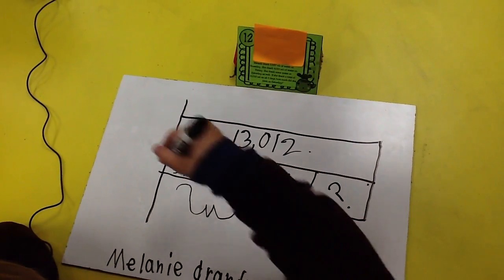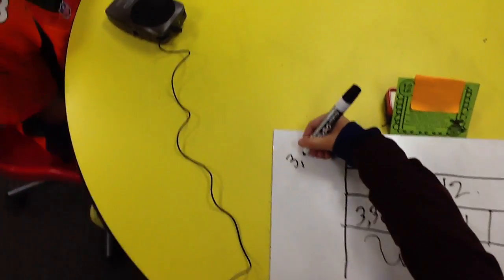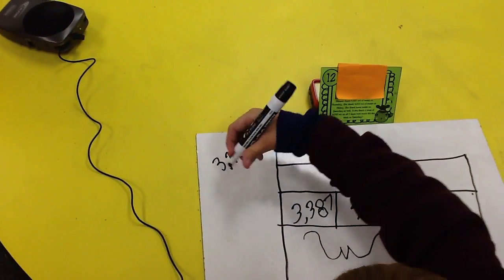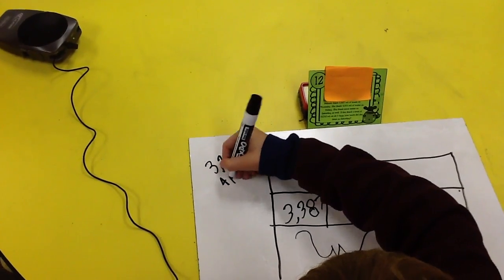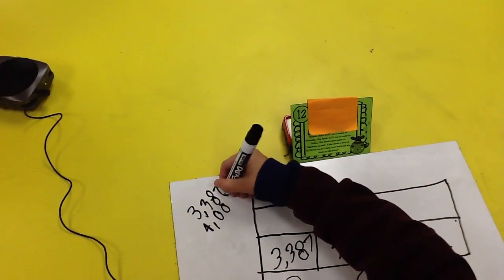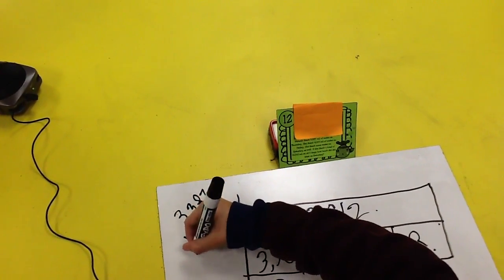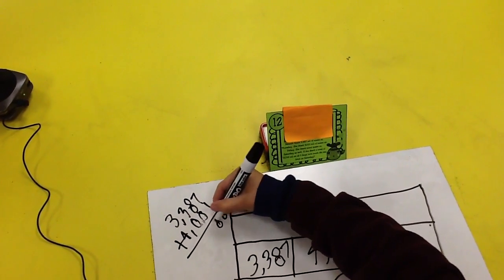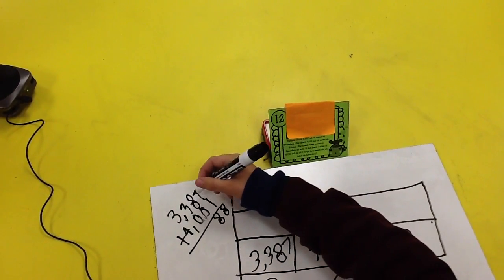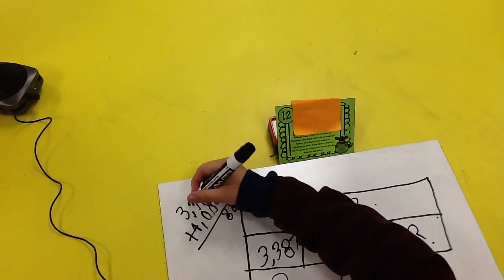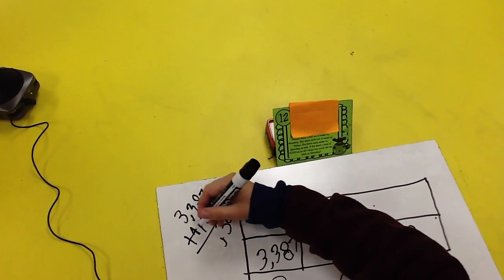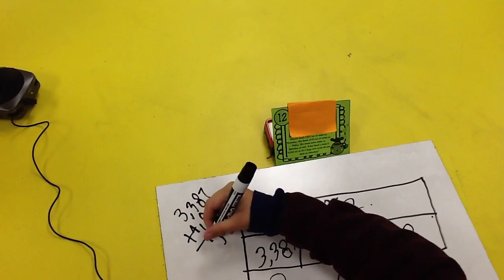So first let me get the sum. That's 3,387 and 4,001. And 7 plus 1 is 8, 8 plus 0 is 8, 3 plus 0 is 3, and 3 plus 4 is 7.